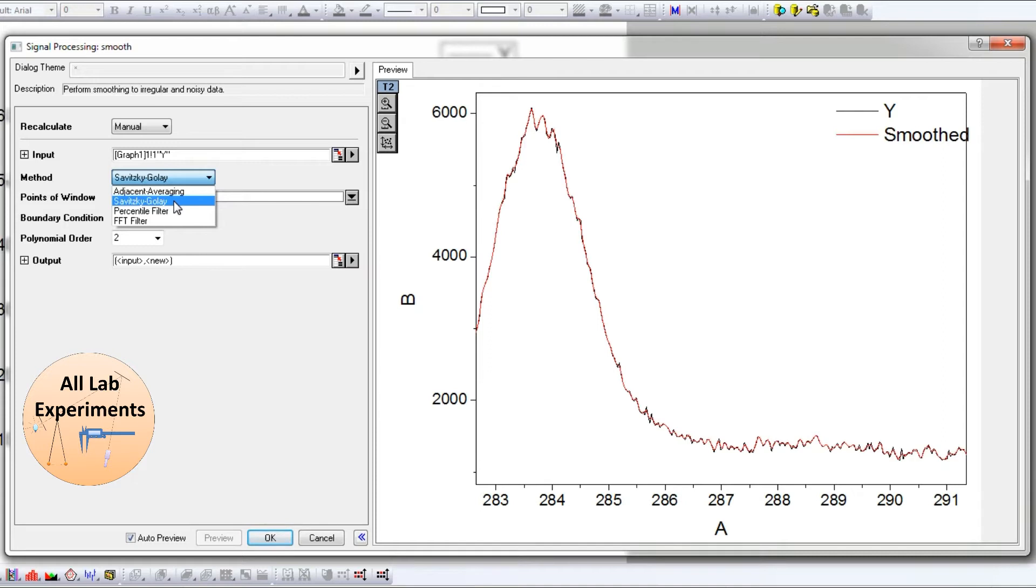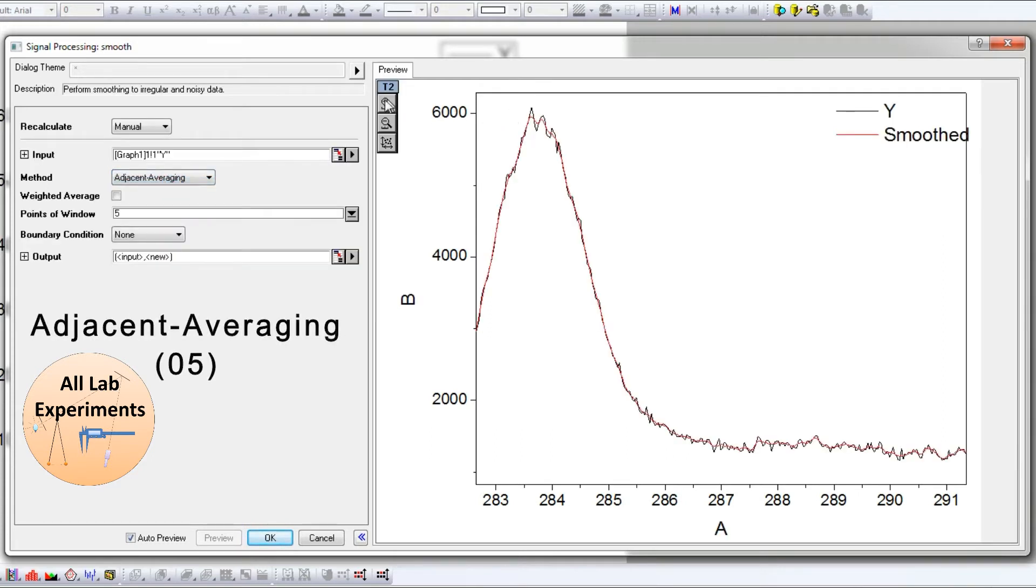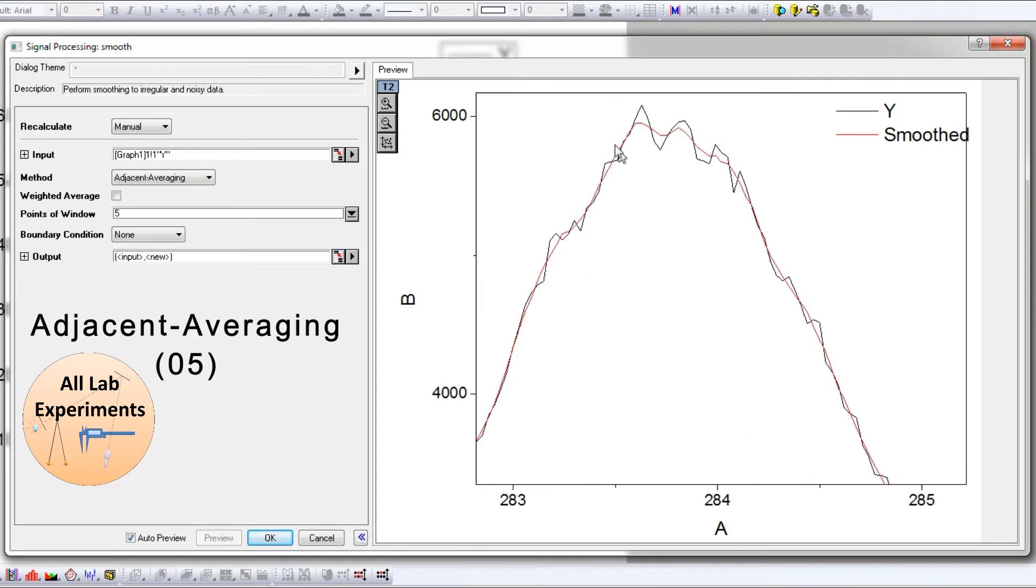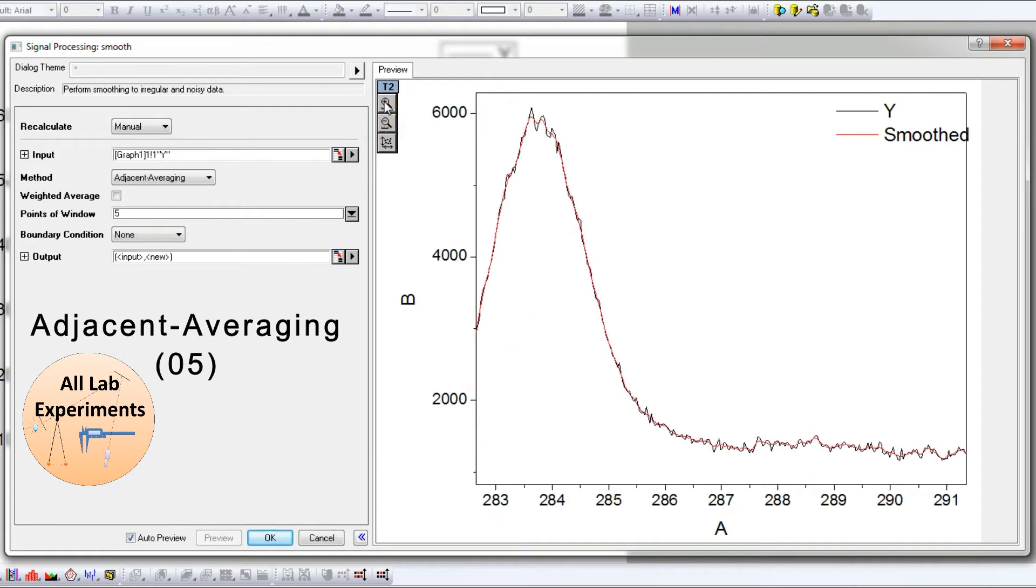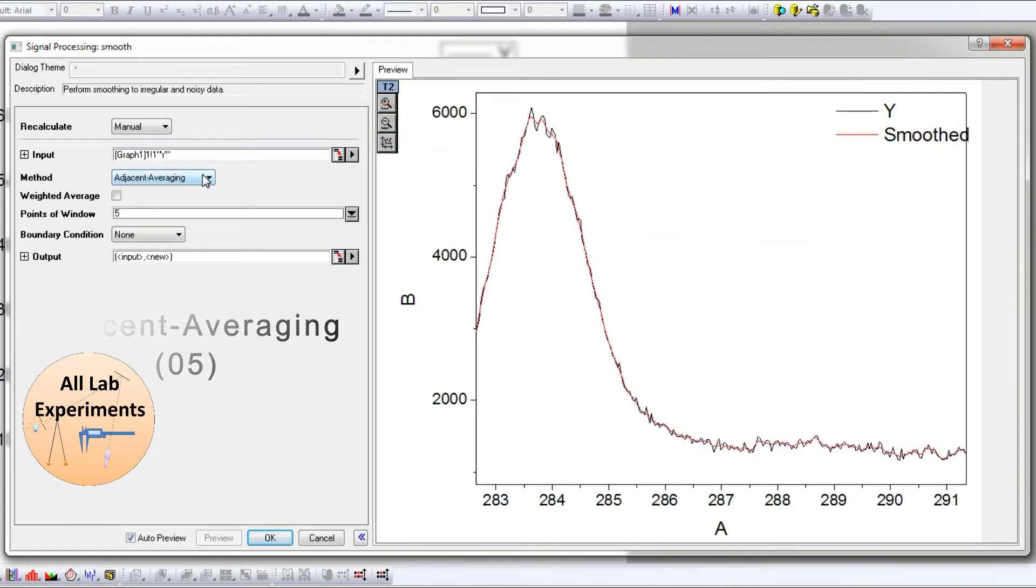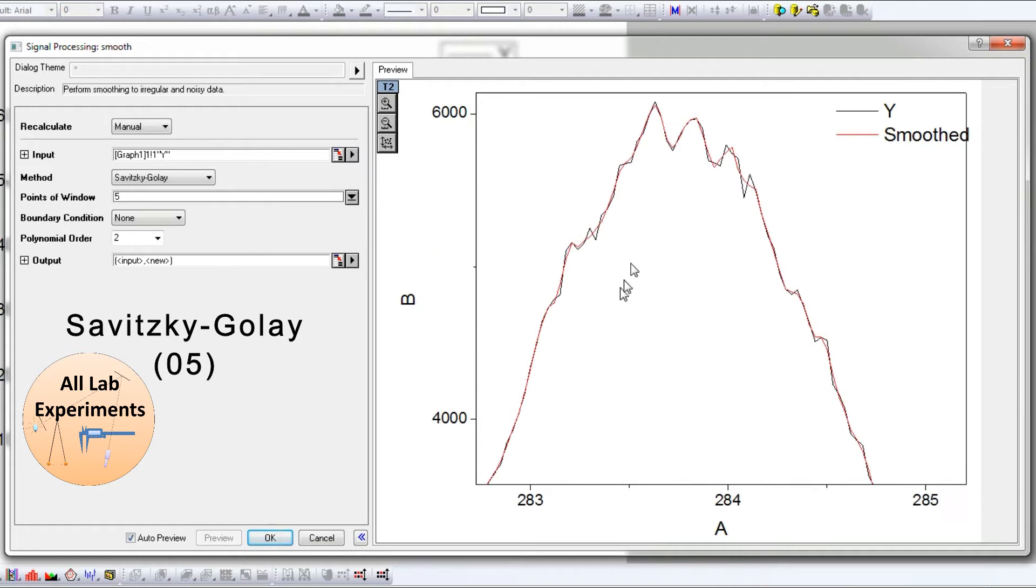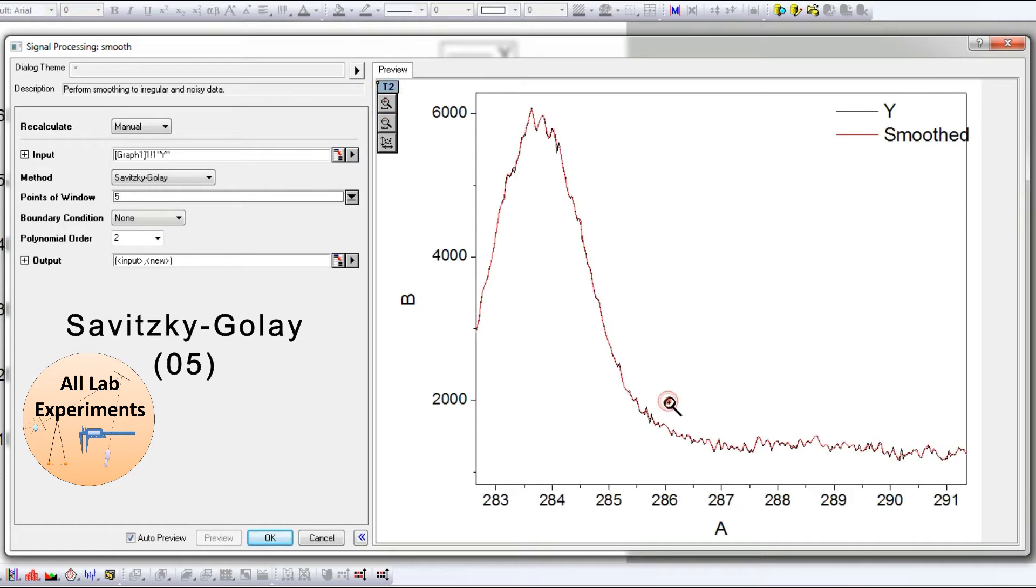That is the trickiest part you should learn. Let us start with Adjacent Averaging. We can see that this peak is getting a little bit smoother and this portion is also getting smoother locally. Now if I switch to Savitzky-Golay, the smooth data is almost the same as the original data.